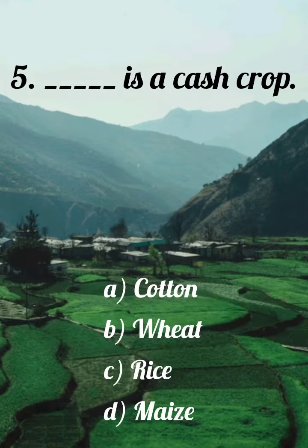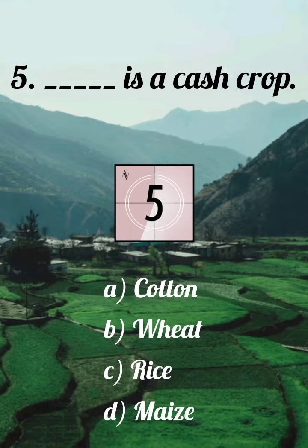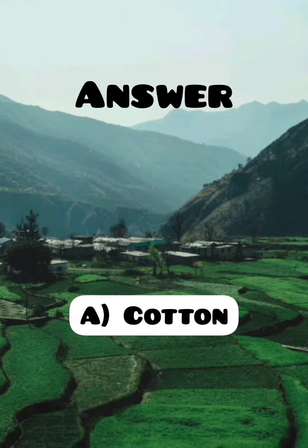Dash is the cash crop. A. Cotton, B. Wheat, C. Rice, D. Maize. Answer: A. Cotton.